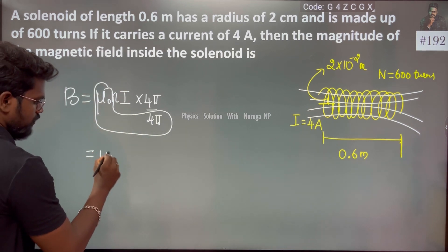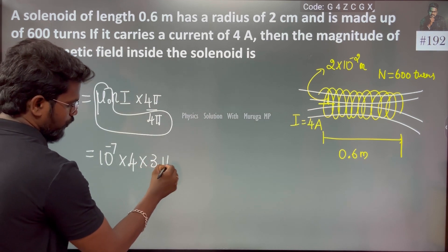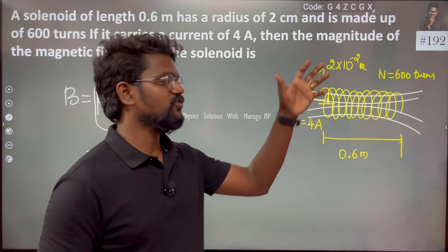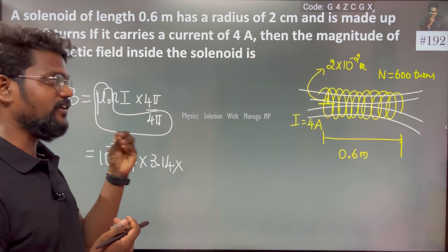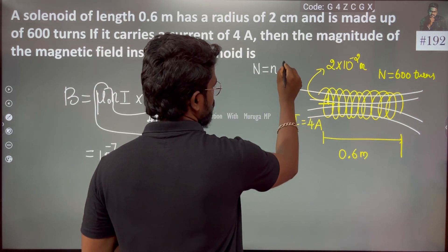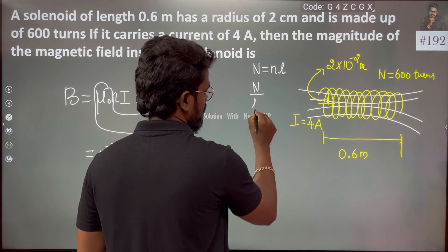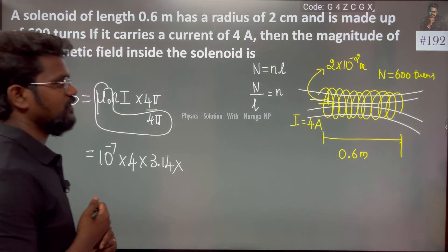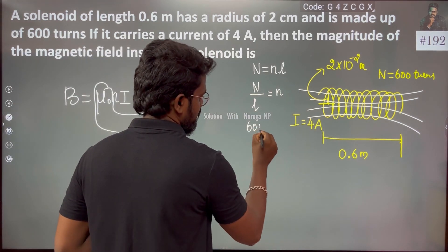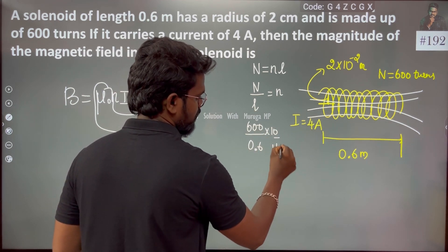So 10^-7 times 4 times π (3.14) times n. Small n is the total number of turns per unit length, capital N is 600. To find small n: N = nL, so n = N/L. This is 600 divided by length 0.6, times current 4A.